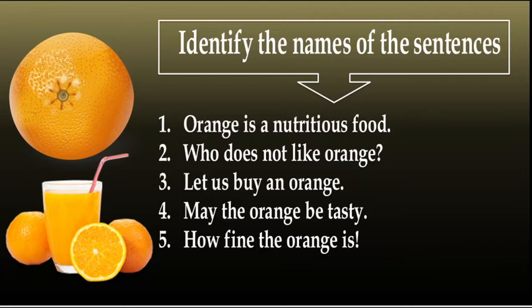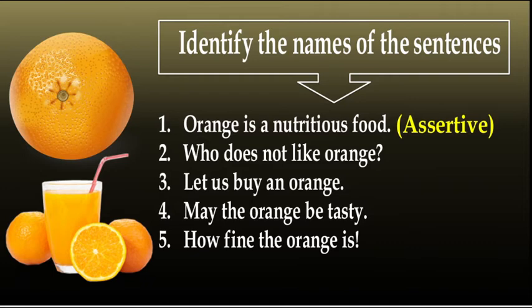Orange is a nutritious food. Who does not like orange? Let's buy an orange. May the orange be tasty. How fine the orange is. There are five sentences. Number one: Assertive sentence — Orange is a nutritious food. Assertive sentences have two kinds: affirmative and negative. If the sentence has 'not', such as 'This orange is not tasty', it will be negative.